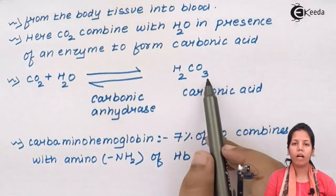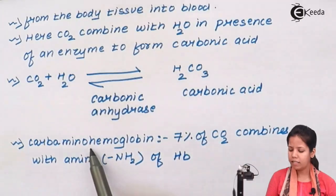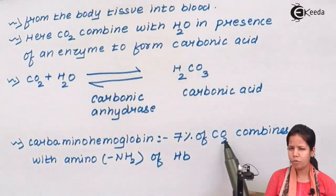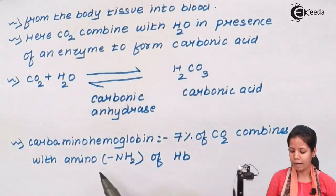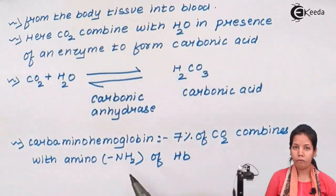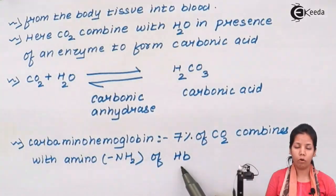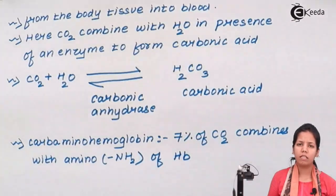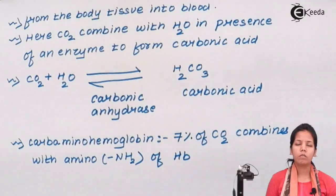Lastly, the carboaminohemoglobin method deals with seven to eight percent of carbon dioxide. Here, carbon dioxide combines with the amino group or NH2 group of hemoglobin, and later it is dissociated from hemoglobin and exhaled out of the body. So those are the three different methods by which carbon dioxide is transported out of your body.